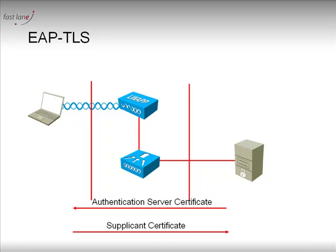That is to say, it sends something to the server that will be used as an encryption method. So with the supplicant certificate, the authentication server will be able to send encrypted values down to the client. And also with this certificate, the authentication server is going to be able to authenticate the client. So the certificate is both a key to encrypt things and also a way to authenticate the other device. This is key for you to understand if you want to get how we configure it on the ACS and on the controller.